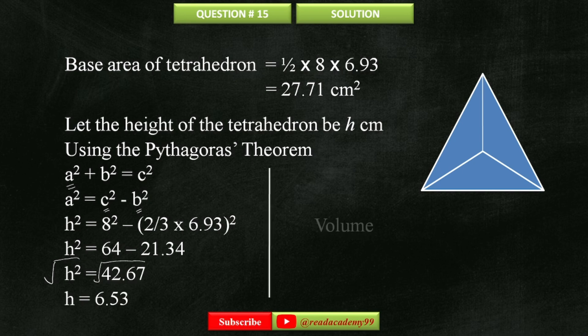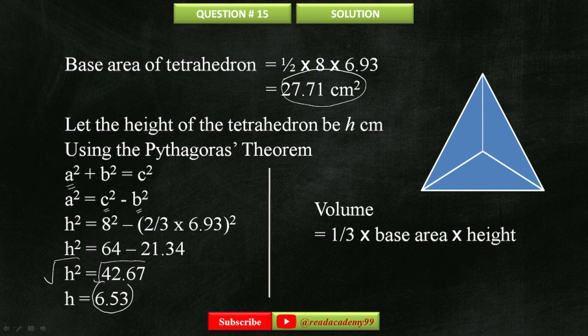Now to find the volume of the tetrahedron, 1 by 3 times base area times height. The area of base is 27.71 and the height is 6.53. Put these values into the equation and simplify it. And the volume of the tetrahedron is 60.3 cubic centimeters.